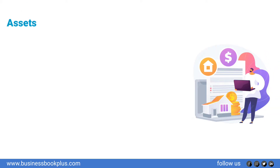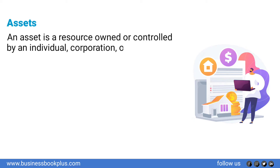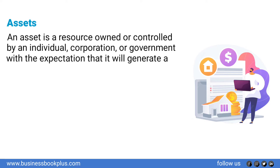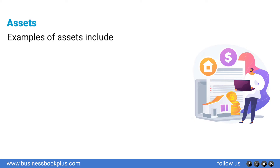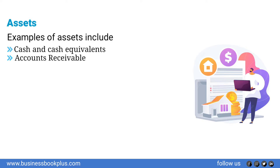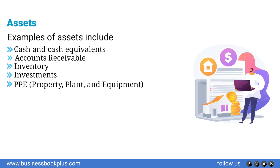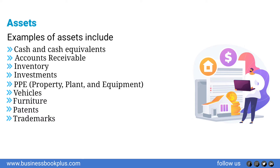An asset is a resource owned or controlled by an individual, corporation, or government with the expectation that it will generate a positive economic benefit. Examples of assets include cash and cash equivalents, accounts receivable, inventory, investments, PPE (property, plant and equipment), vehicles, furniture, patents, and trademarks.